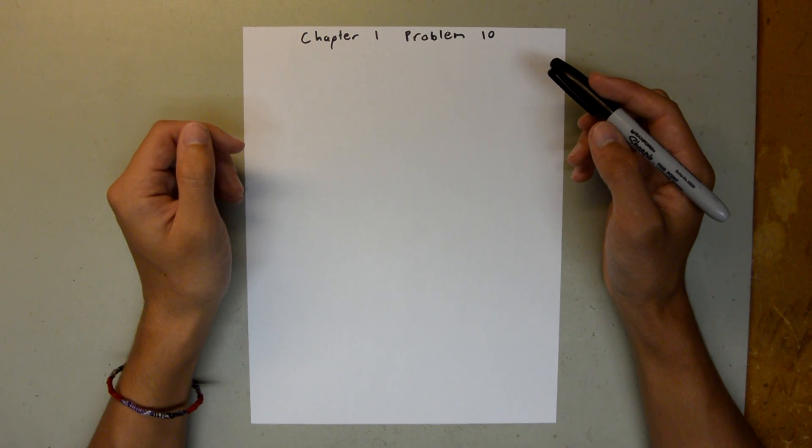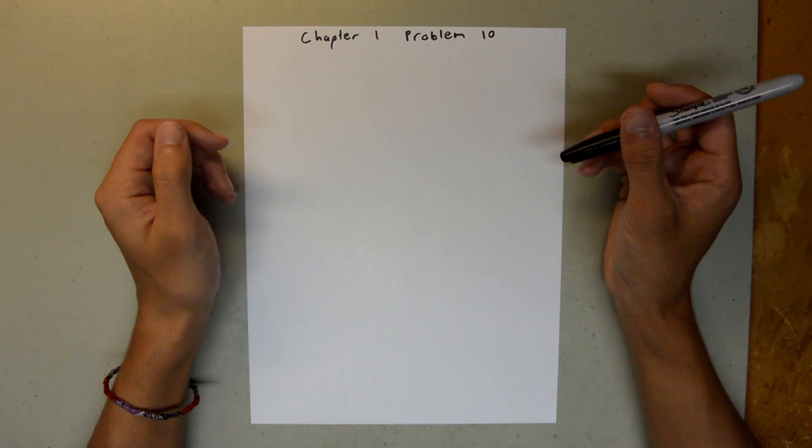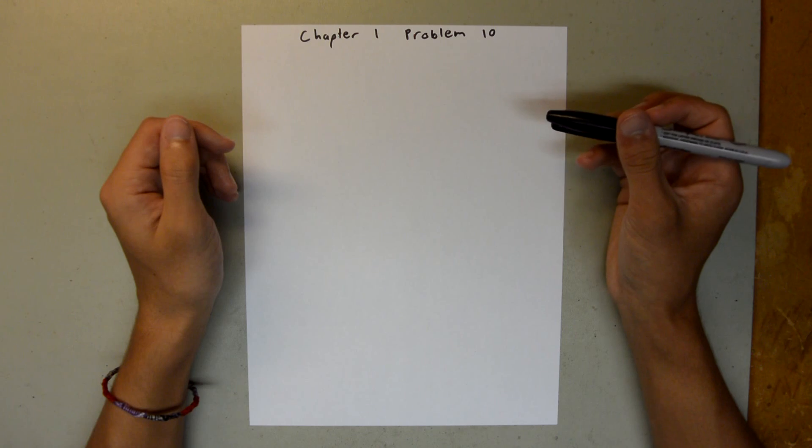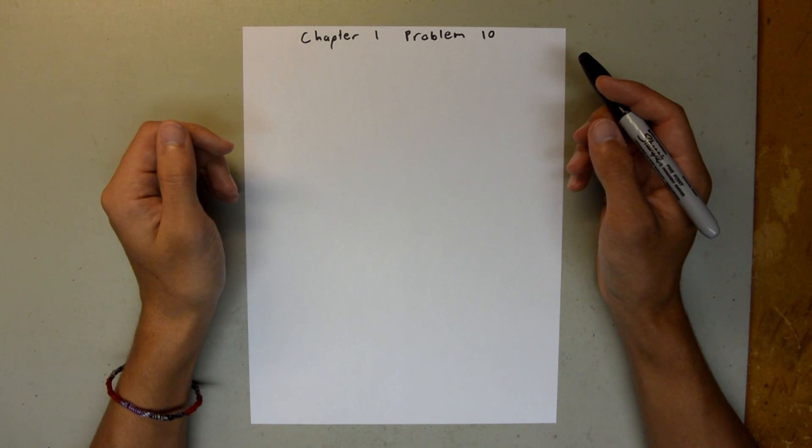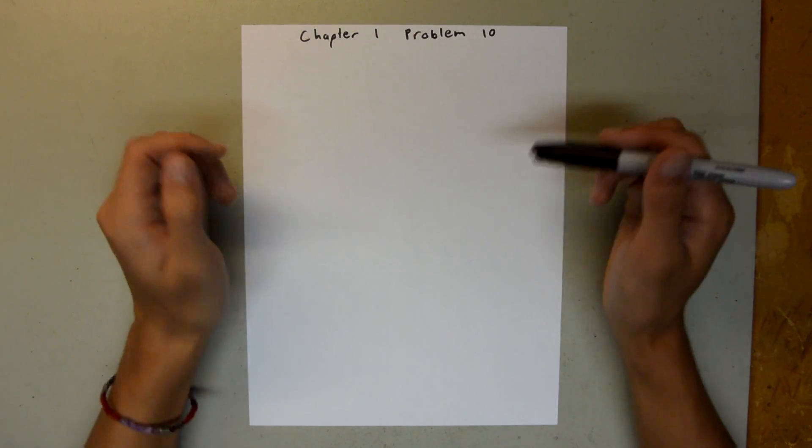Chapter 1 is all about measurement, and in Problem 10, we are told that some plant grows 3.7 meters in 14 days, and we're asked to find the growth rate in micrometers per second.